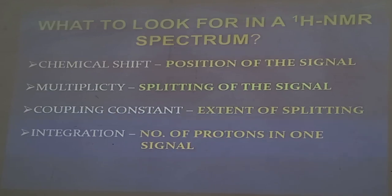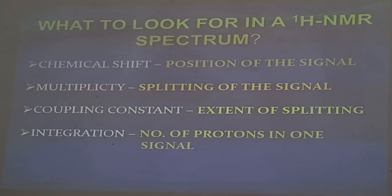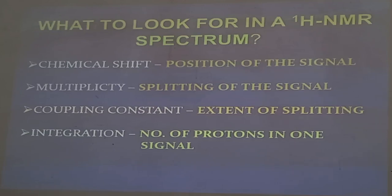One CH3 gives one signal, the other CH3 gives another signal, and the CH2 gives the third signal. So you might see a signal for three protons, another signal for three protons, and another signal for two protons. Integration gives you the information of how many protons are associated with each signal, and when you sum up the protons from all the signals, you get the total number of hydrogens in the molecule.